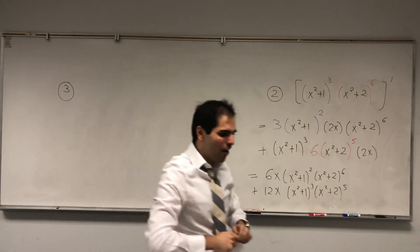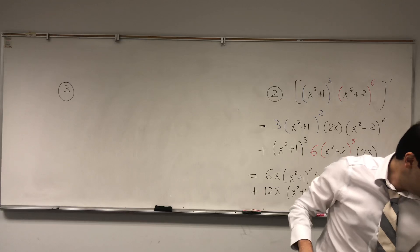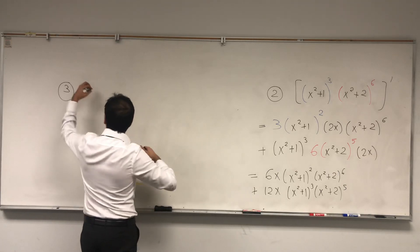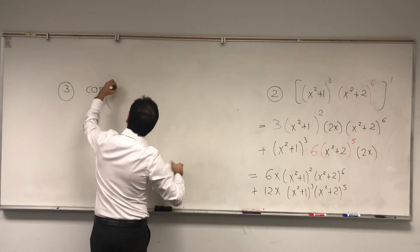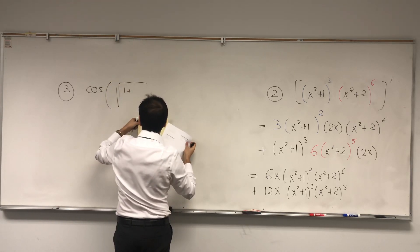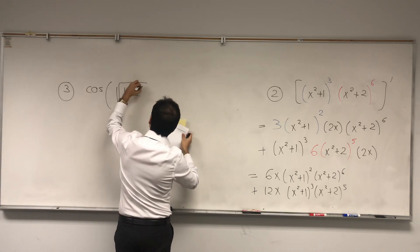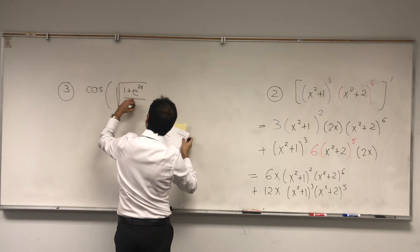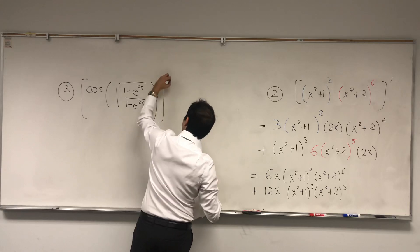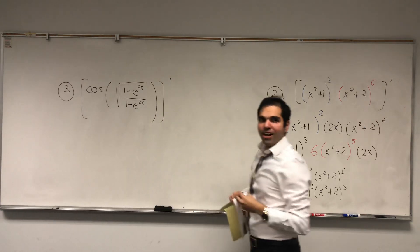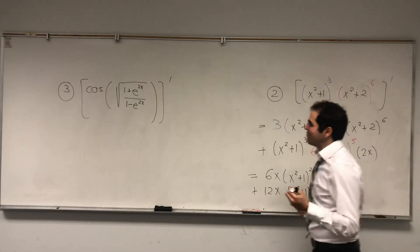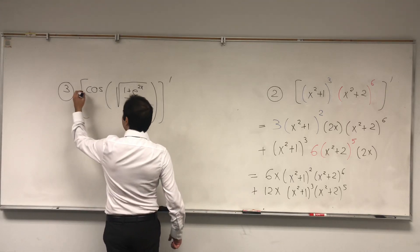Because we've done the product rule, now let's do a quotient rule example. This one: the derivative of cosine of square root of 1 plus e to the 2x, over 1 minus e to the 2x. This one is quite ridiculous because you have a lot of nested functions, but believe in yourself — or believe in the chain rule.